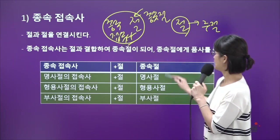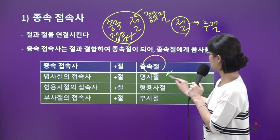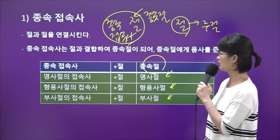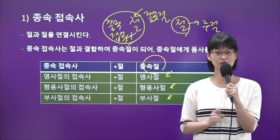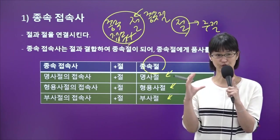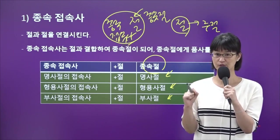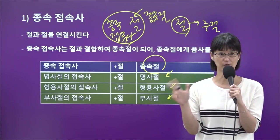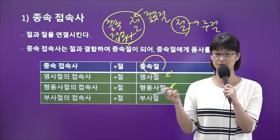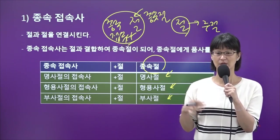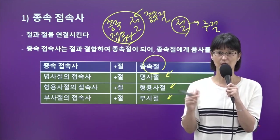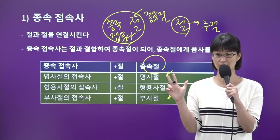밑에 있는 표를 보시면 종속절의 종류가 세 가지예요. 명사절, 형용사절, 부사절. 앞에서 배웠던 투부정사와 동명사를 같이 생각하시면 조금 더 쉬운데요. 이 구에게도 품사를 주는데 줄 수 있는 품사가 딱 세 개밖에 없어요. 투부정사는 명사, 형용사, 부사가 됐고 동명사는 명사가 됐죠. 마찬가지로 절도 사람들이 인위적으로 이 절에게 품사를 주는데 그 품사도 세 개밖에 없는 거예요.